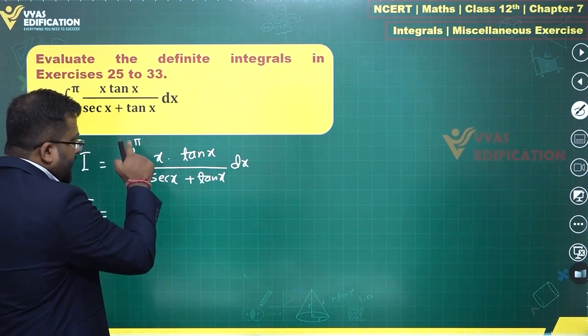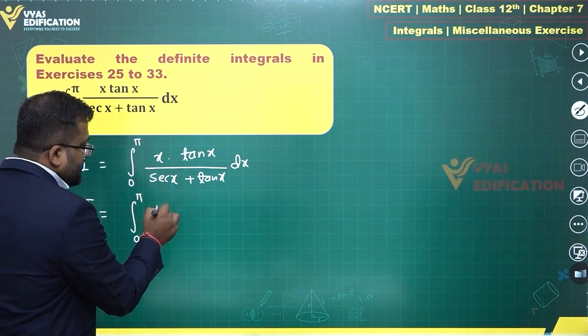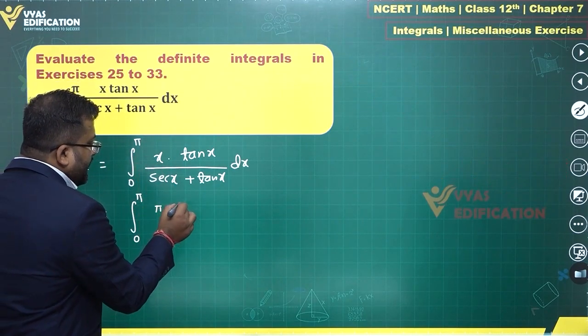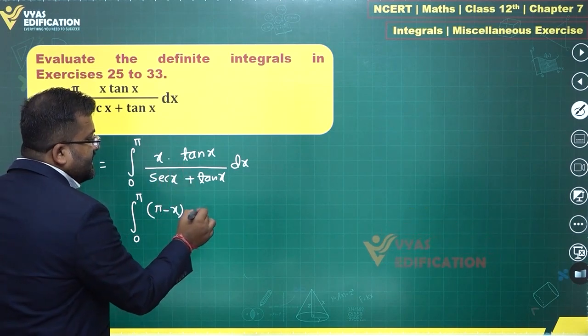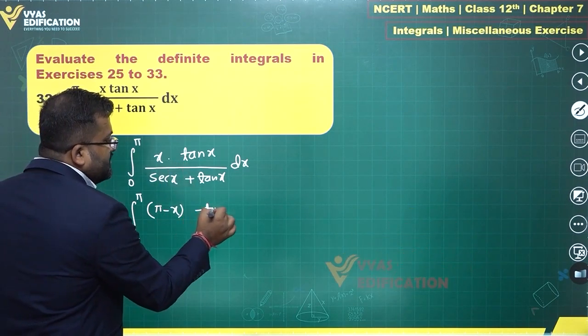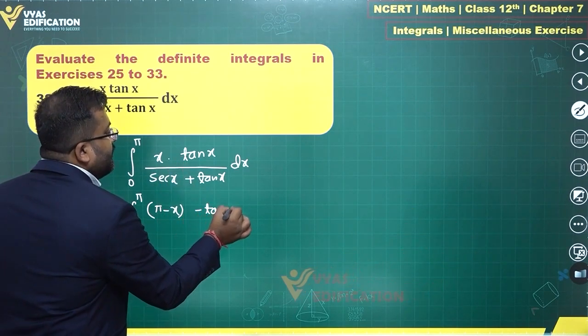Applying the property, a + b - x becomes π - x, and tan(π - x) equals minus tan x.